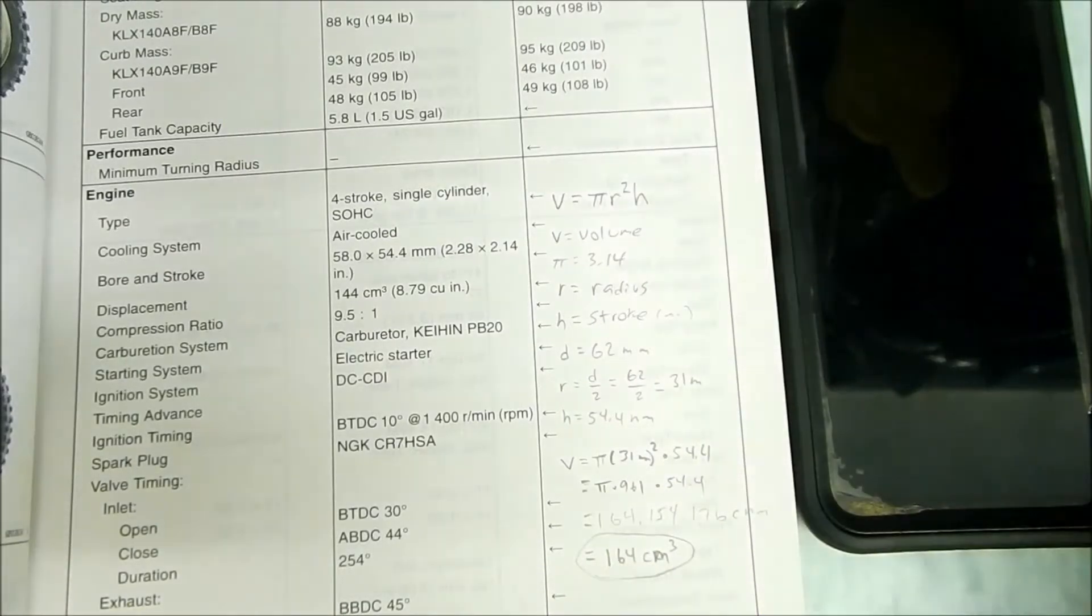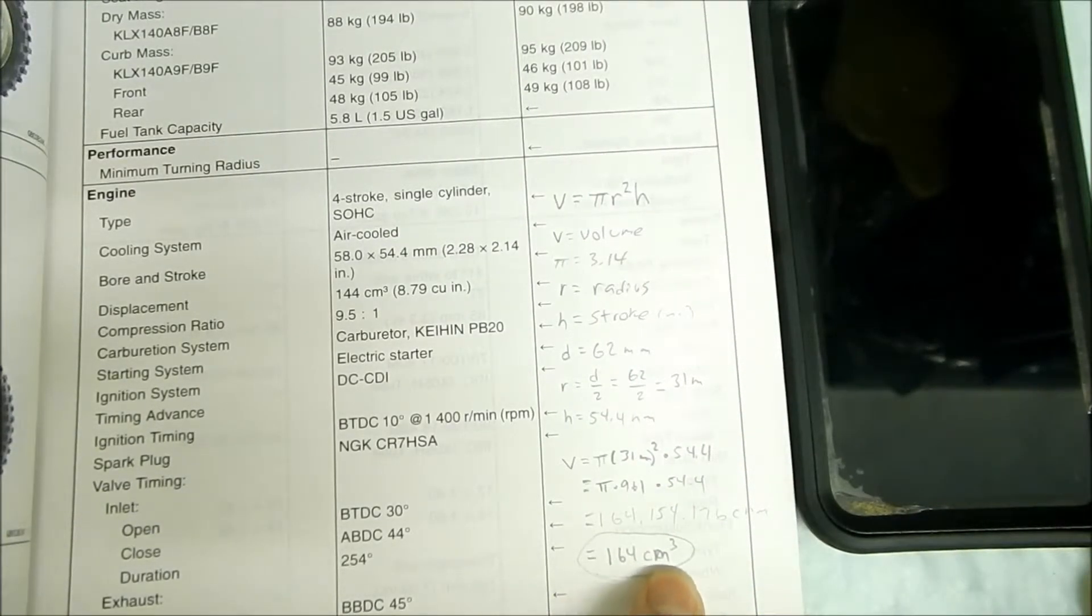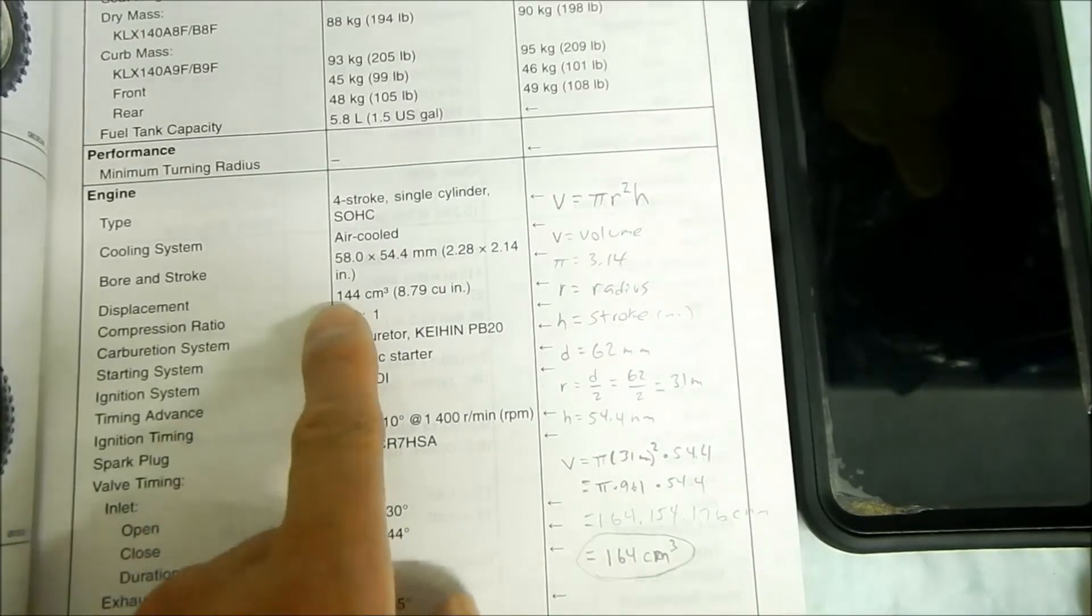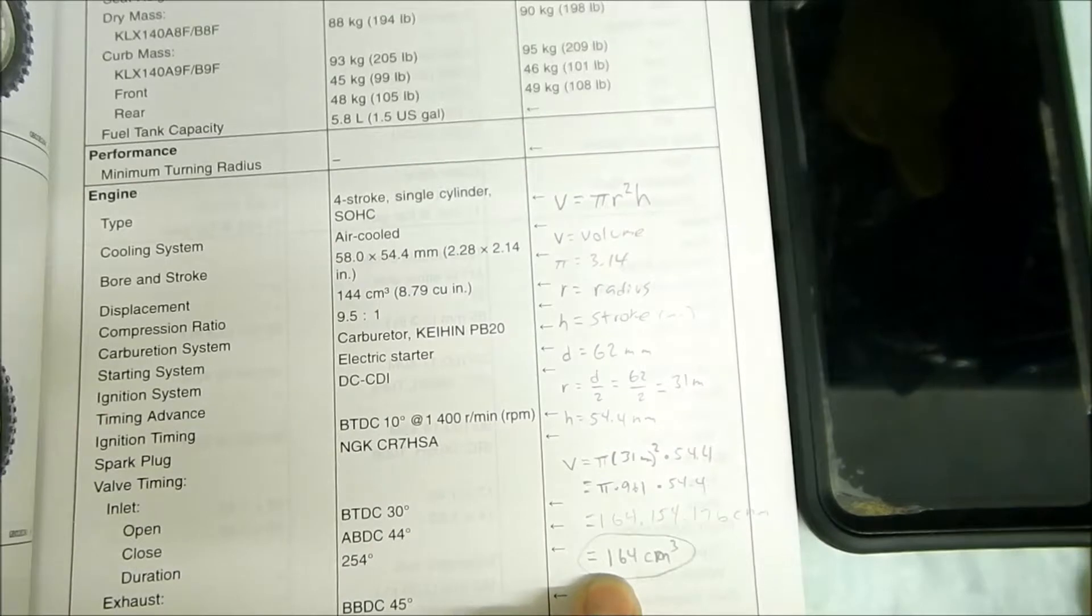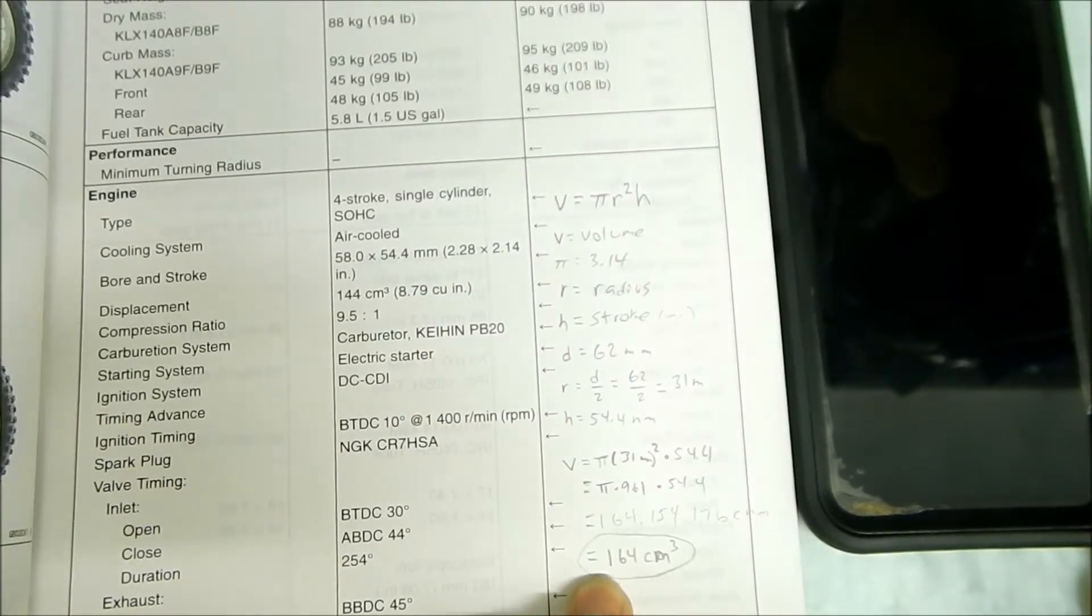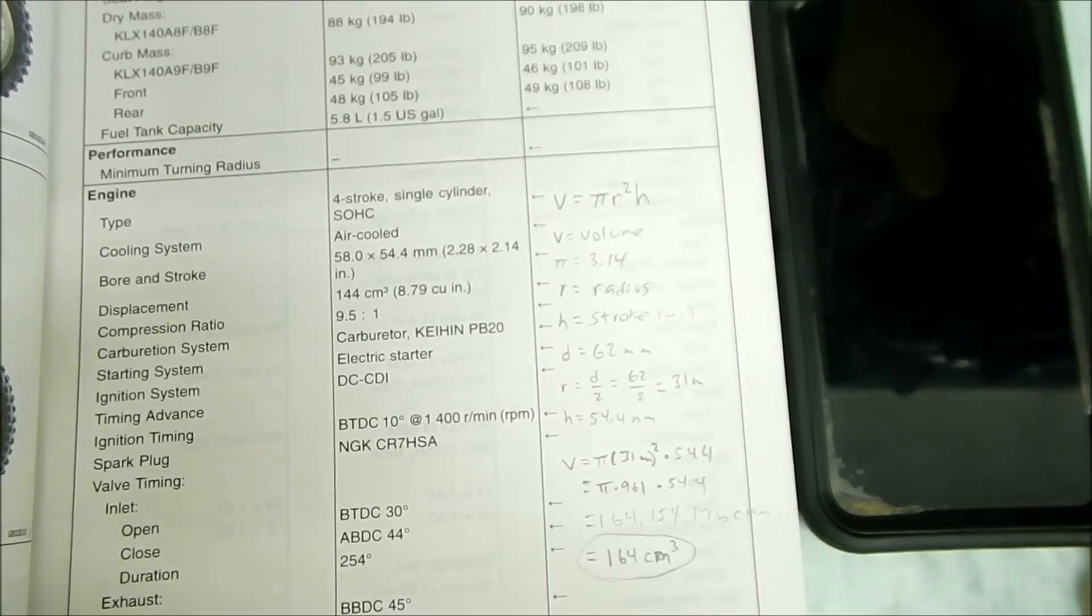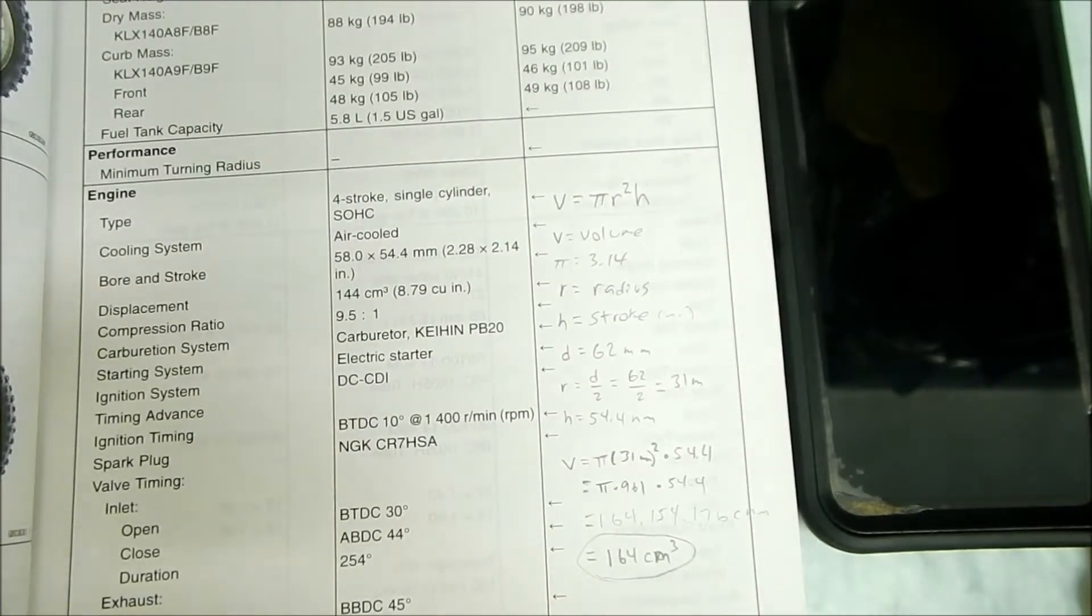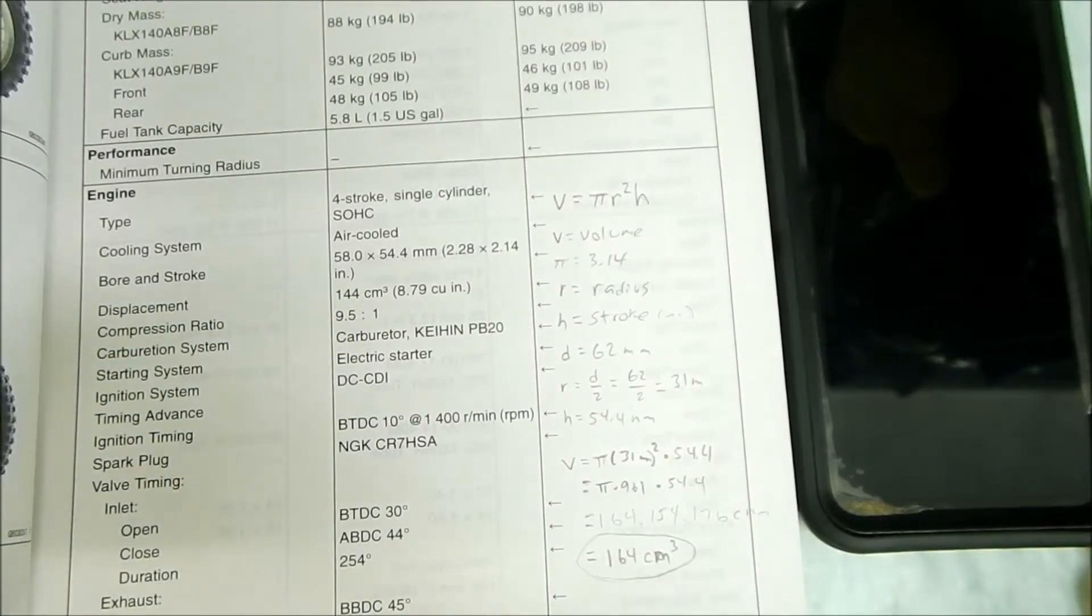I know I kind of got the units messed up at the end, but 164 cm cubed is what it is. The stock number is 144 cm cubed, so that's how they get the KLX 170. Technically really you're only going up, you're going from like a 140 to a 160, so you're going up like 20. So technically the American KLX would be a 160, an Asian KLX would be a 170.